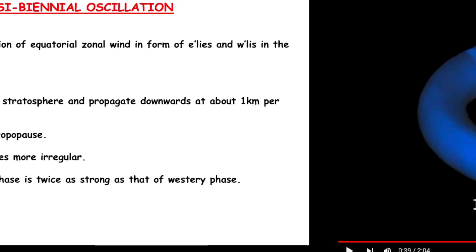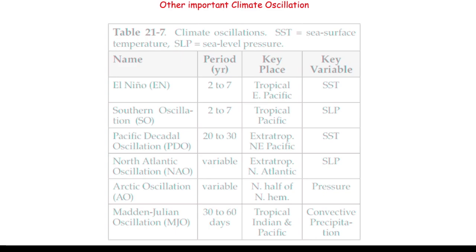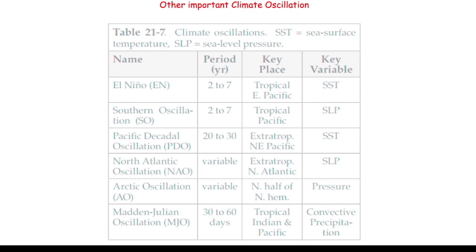For comparison, other climate oscillations have different periods: El Niño is 2 to 7 years; Southern Oscillation is 2 to 7 years; PDO (Pacific Decadal Oscillation) is 20 to 30 years, a decadal process; North Atlantic Oscillation is variable but also decadal; Arctic Oscillation is variable; and the Madden-Julian Oscillation is 30 to 60 days. El Niño, Southern Oscillation, and MJO are already covered. I will make separate videos on PDO, NAO, AO, and SAM (Southern Annular Mode). Take a screenshot — this will be very useful for future exam questions.